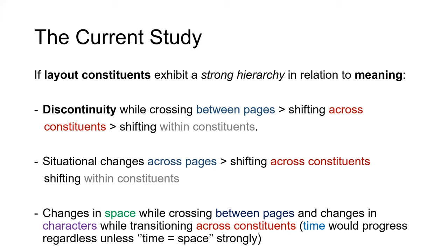Similarly, situational changes in time, characters, and space would be most while moving across pages, then while shifting across constituents, and least while shifting within constituents. If there is a strong hierarchy, changes in space would align with crossing pages — because that is the most prominent category and also physical. Changes in characters would coincide with transitioning across constituents, and time would progress regardless, because that is the default in comics, unless time equals space strongly, as McCloud proposes.